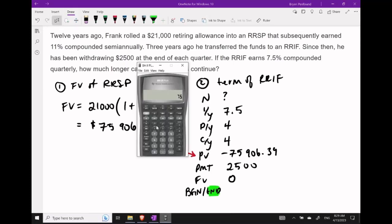I'll begin by programming 7.5 for i. In the submenu, program both PY and CY to be 4. Then move to present value: enter negative 75906.39 for PV. Payments are 2,500. Future value is zero. Computing n, we get about 45.3.